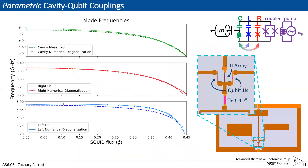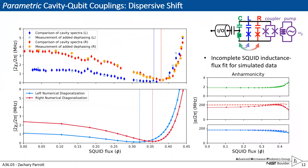Now we'll look at our other experiment involving cavity-qubit cubic coupling. Here we have our mode frequencies again, but now additionally the cavity mode shares the coupler branch, so it tunes as well with the SQUID. The heart of this experiment was the dispersive shift. If we look here at the static dispersive shift — with the measured experimental data in the top panel and our simulations in the bottom panel — we replicate much of the same features in terms of the order of magnitude of roughly one and three megahertz of coupling for the left and right at zero flux, and we get a minima for both of them that doesn't quite line up.